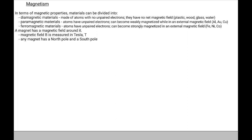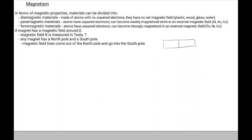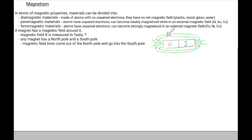Any magnet has a north pole and a south pole — magnetic monopoles do not exist. Magnetic field lines come out of the north pole and go into the south pole. So if we have a magnet with a north and south pole, the magnetic fields circle around from north into south, and the direction of the magnetic field is out of north and into south.